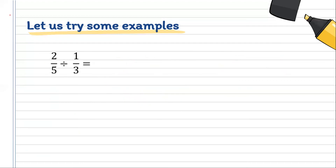Always remember that not every fraction allows the cancellation process. Let's try 2 over 5 divided by 1 over 3. It remains as 2 over 5, division becomes multiplication, and the reciprocal of 1 over 3 is 3 over 1. We cannot divide 2 and 3, or 1 and 5 — there's no number that can divide them. So we go straight to top times top: 2 times 3 is 6, and bottom times bottom: 5 times 1 is 5. We change 6 over 5 into a mixed number, giving us a final answer of 1 and one-fifth.